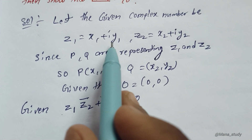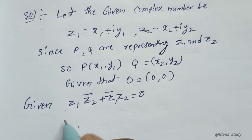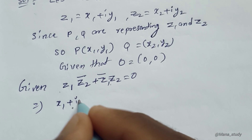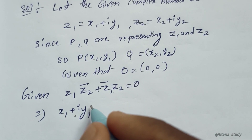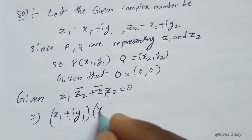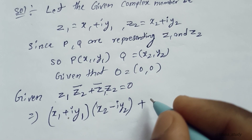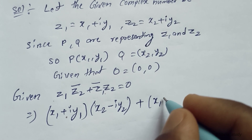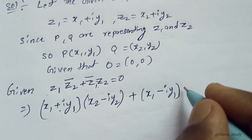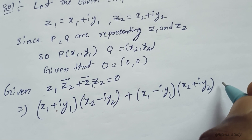Z1 equals X1 plus iY1, and Z2 equals X2 plus iY2. So Z̄2 equals X2 minus iY2, and Z̄1 equals X1 minus iY1. Substituting into Z1·Z̄2 plus Z̄1·Z2 equals 0.